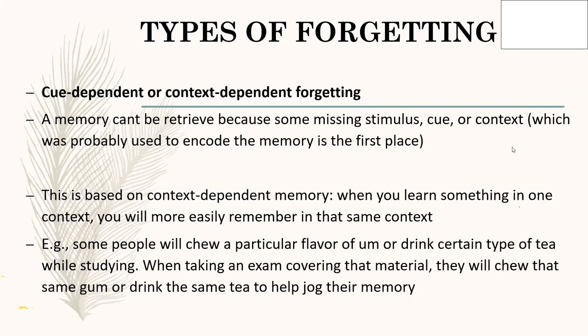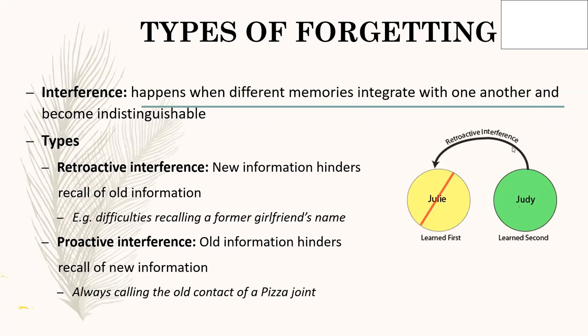A student asked whether the girlfriend scenario could illustrate proactive interference — for instance, if a person calls their current partner by the former girlfriend's name due to past experiences. Yes, that would be proactive interference, where the old information prevents recalling the new.